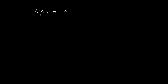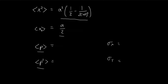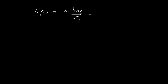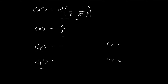Earlier in the book, David Griffiths proved that you can evaluate momentum with this formula — you can take the derivative of the expected value of x directly. Because this is a constant, this is going to be zero, so the expected value of momentum is equal to zero. We're already done.